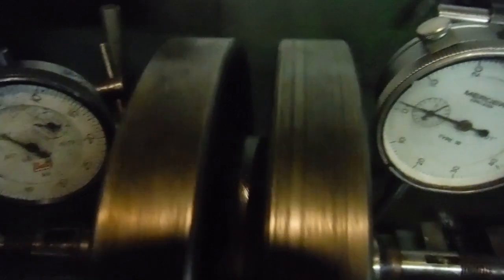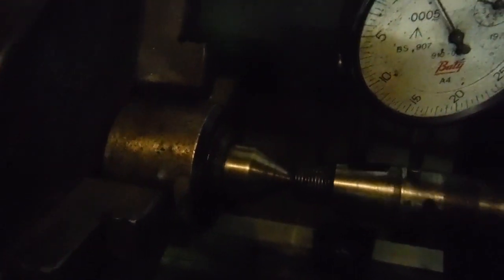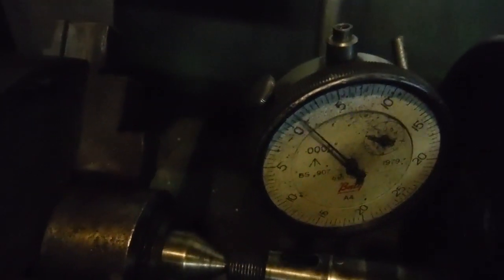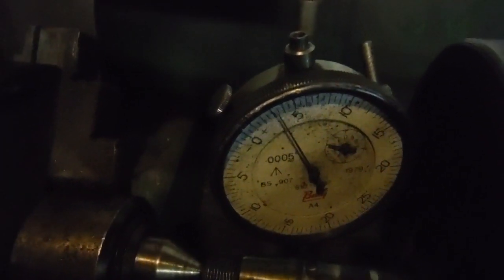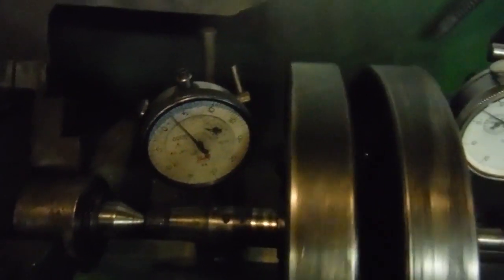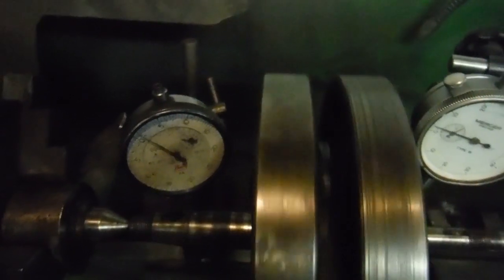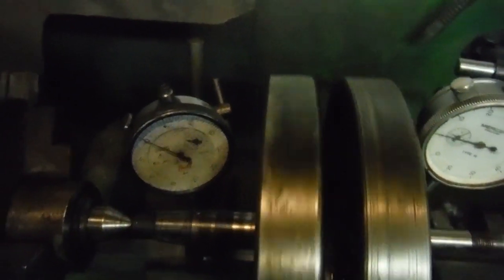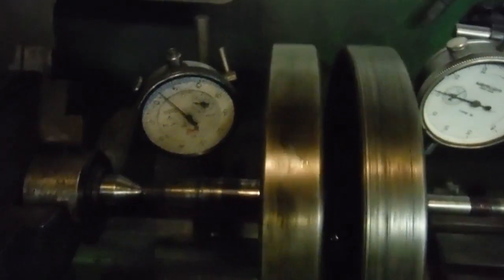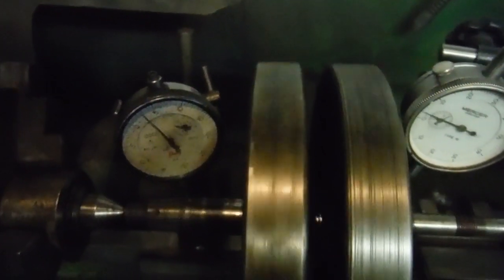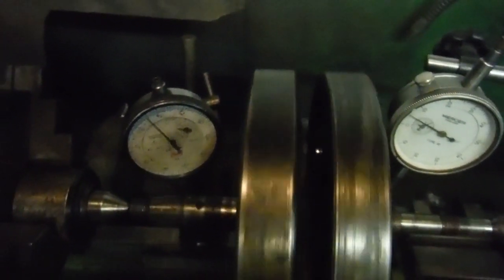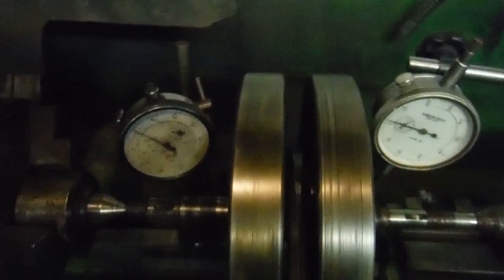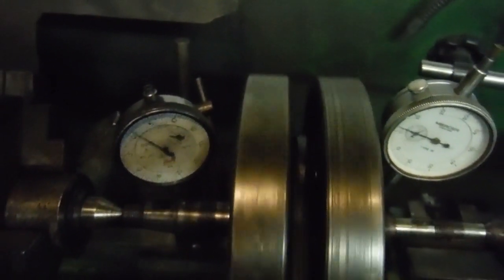We're clocking about four thousandths of an inch runout on that one and we're getting about three, three and a half thousandths of an inch on this one. But crucially, they're rising and falling together, so their rises and falls are at the same points of rotation, so to a large degree they cancel each other out.